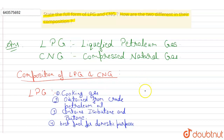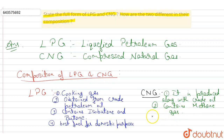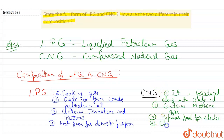Now for CNG. CNG is produced and used along with crude oil, and it mainly contains methane gas. CNG is a popular fuel for vehicles like three-wheelers, scooters, cars and buses. It is a cheap fuel as well as pollution-free.